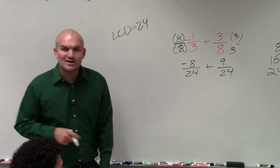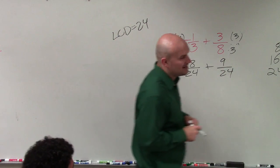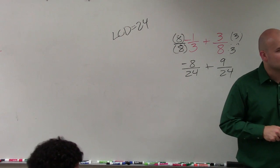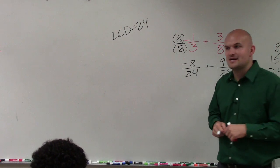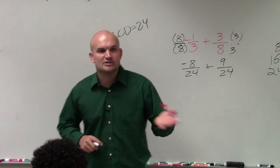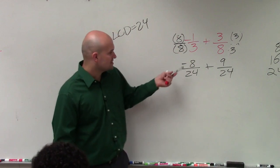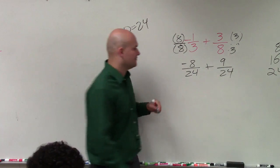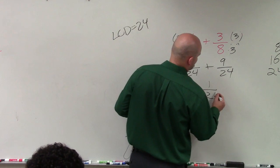So therefore, now I have negative 8 over 24 plus 9 over 24. And now, when we need to combine fractions, as long as they have common denominators, we just add or subtract our numerators. So just think about it: you owe $8, you have $9 in your pocket. Therefore, you're going to have $1 left. And you keep the denominator the same.